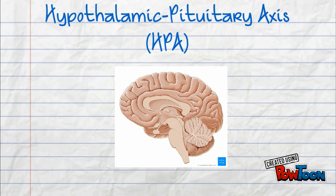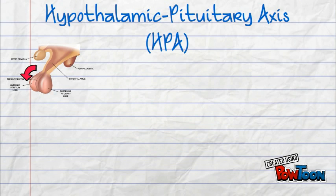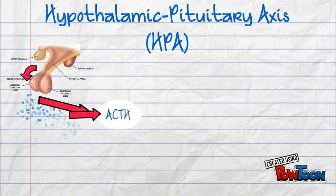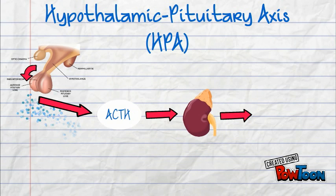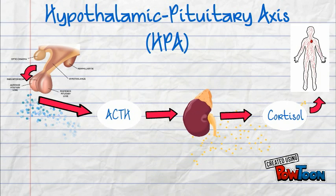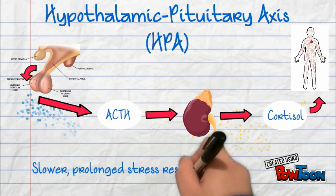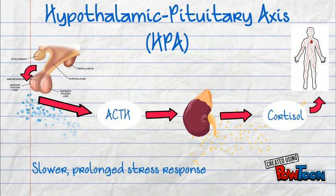Chronic or prolonged stress is maintained by the hypothalamic-pituitary axis. It all begins in the hypothalamus, which releases a hormone that goes to the anterior pituitary, causing it to release ACTH. ACTH then goes to the adrenal gland and causes it to release cortisol. Cortisol acts on the body and increases metabolic activity, blood sugar, and alertness.